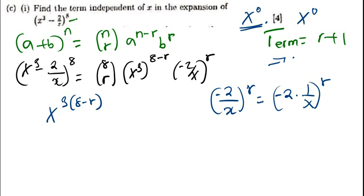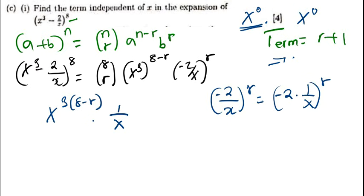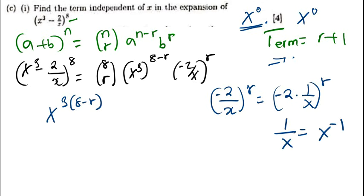I want you to understand that if you have got 1 over x, it's basically the same as x raised to the power negative 1. So what I'm going to do here is — I've got 1 divided by x, so we are only interested in x. Since I've got this part 1 over x, it is raised to the power r, which is the same as x to the power negative 1. So this is basically the same as x times x raised to the power negative 1, but there is r outside. So it's the same as negative r.